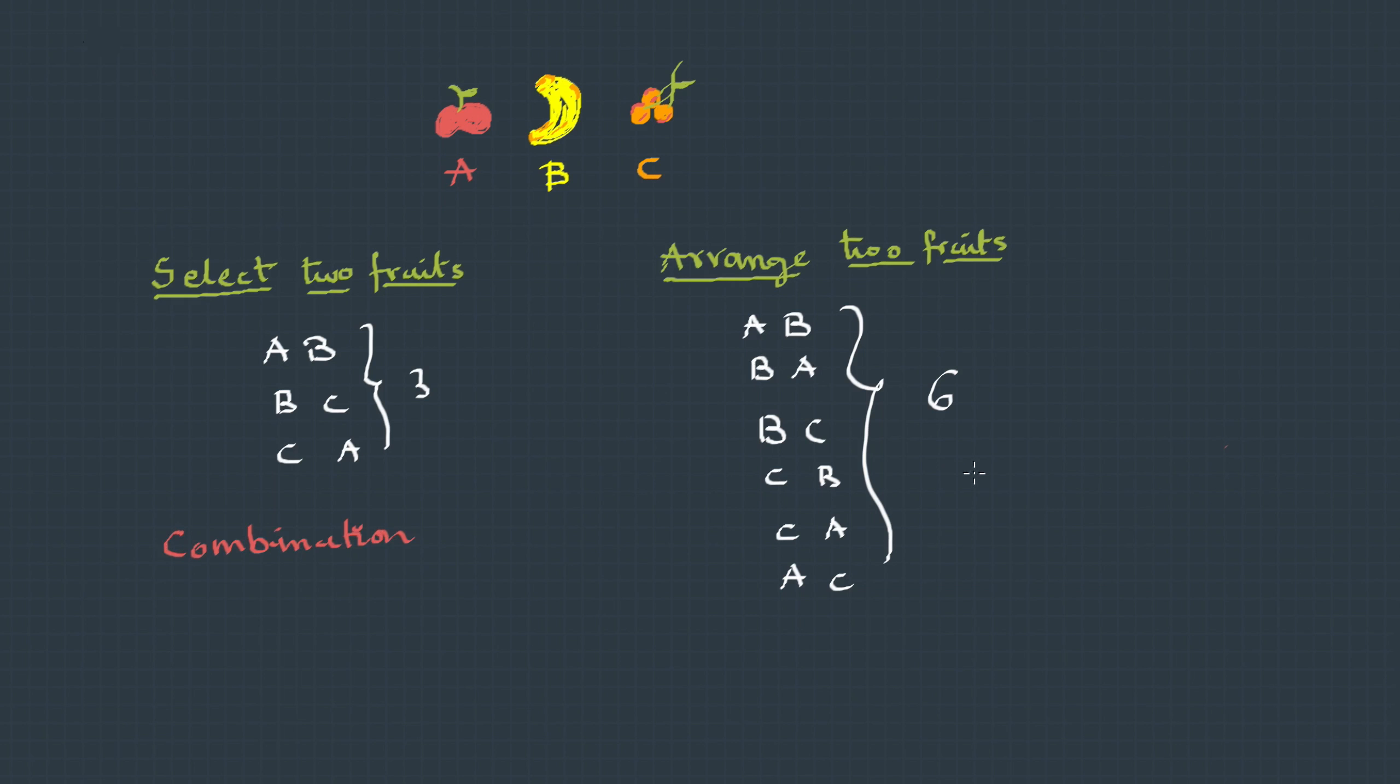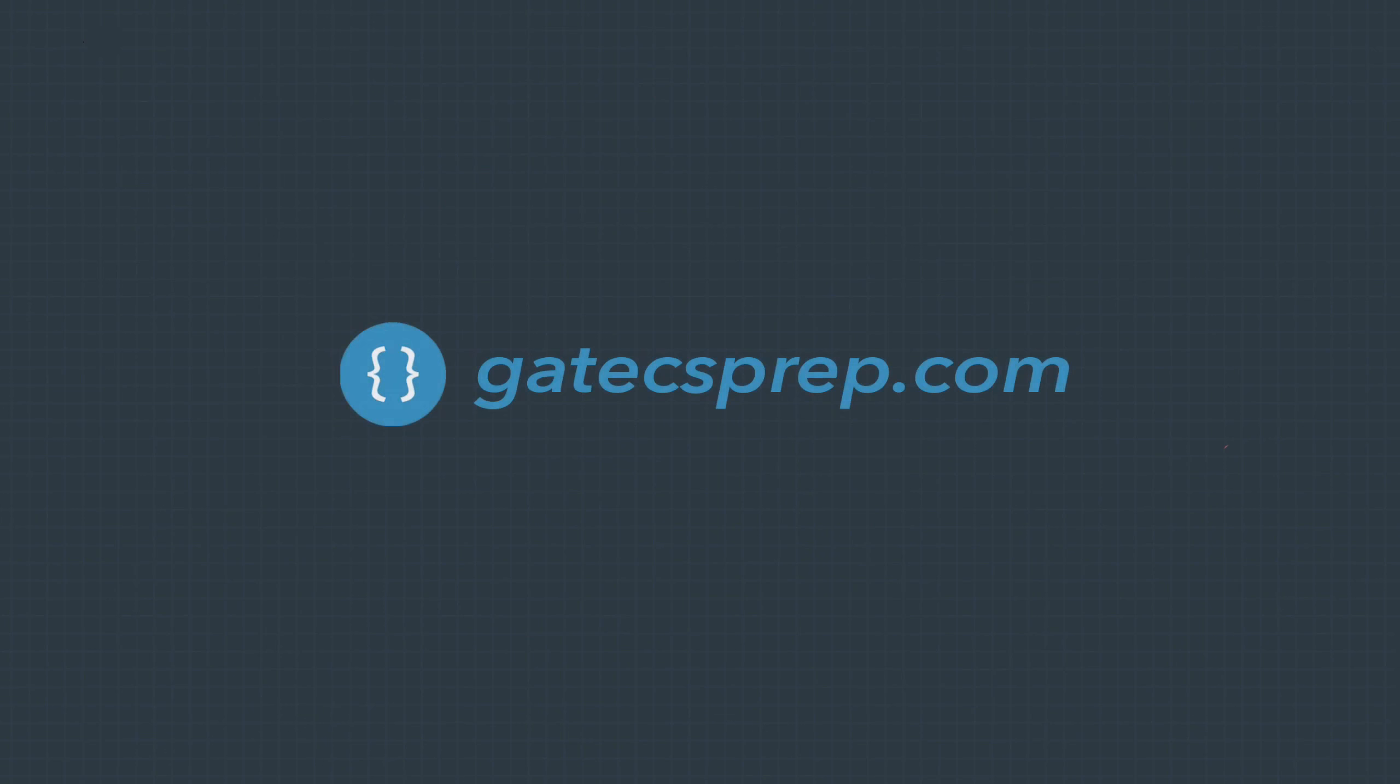And arrangement is called as permutation. Combination is basically a selection where order doesn't matter, whereas permutation is a selection plus arrangement, and here order is important.